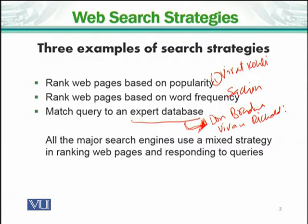So these are three strategies — popularity, word frequency, and expert databases. Most search engines use a mixture of these three at one time. Now let's look at each one in detail.